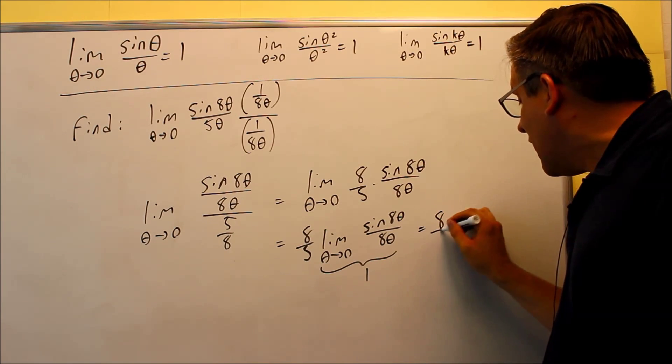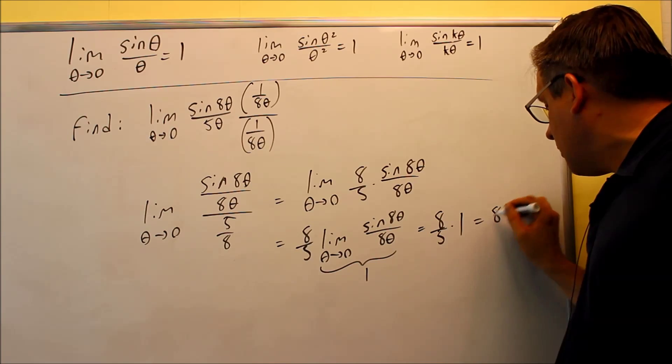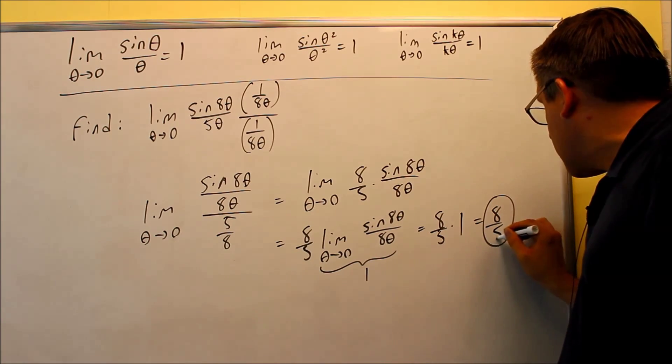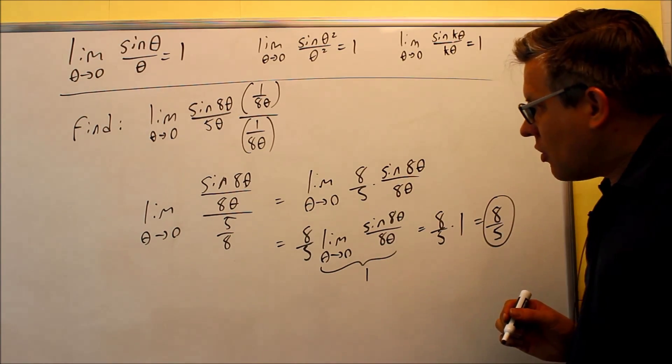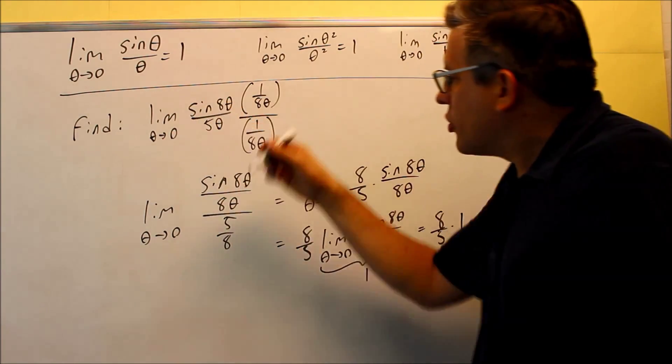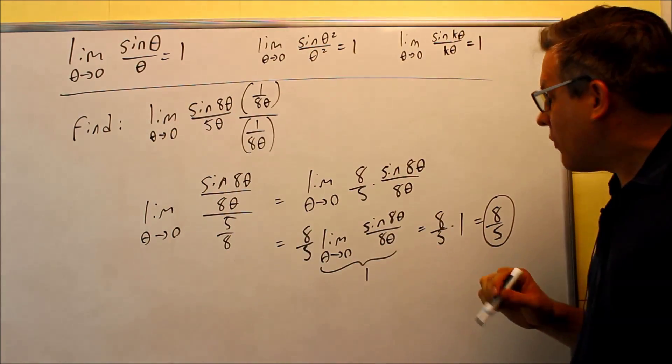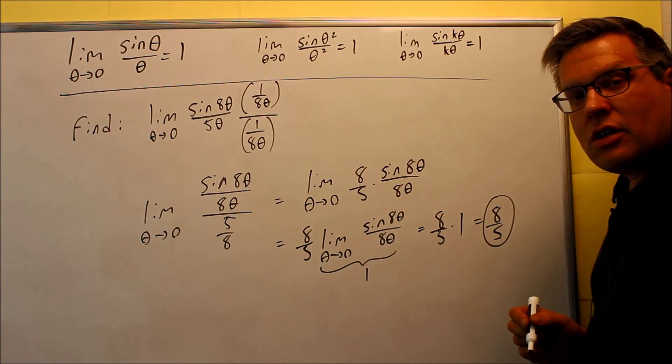So what happens is you have eight fifths times one, which means that your final answer is going to be eight fifths. So the limit as theta goes to zero, the original problem was sine of eight theta over five theta. Final answer should be eight fifths.